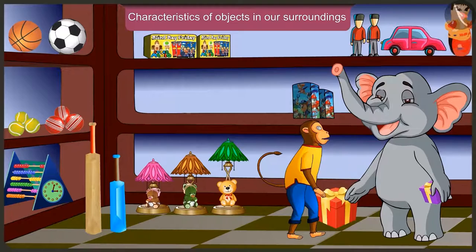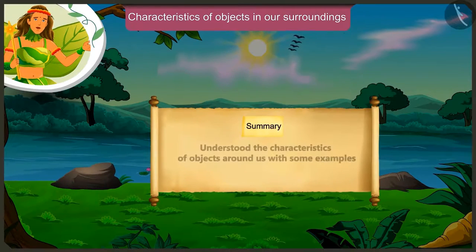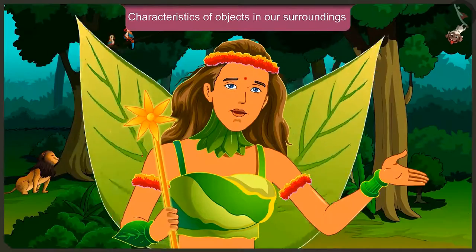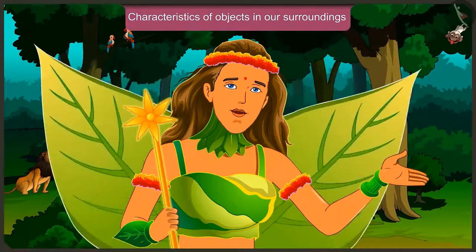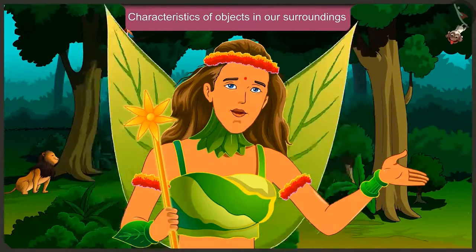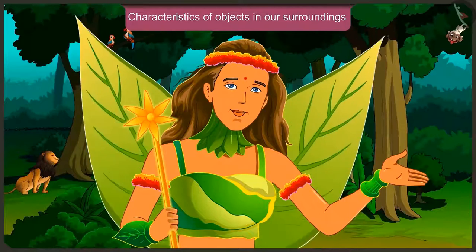Come on, let's go now. Today we understood the characteristics of objects around us with some examples. In the next video, we will see the mistakes we make while understanding the characteristics of the objects around us.